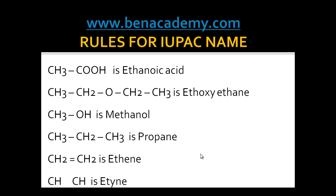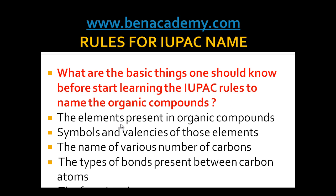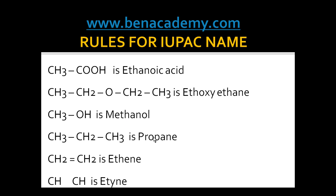When you were browsing through your textbook, you might have come across lots of formulas like this: CH3 – CH2 – O – CH2 – CH3, which is ethoxyethane. You would have come across several such compounds and wondered: what is this? How do we get these formulas, and how do we get these names?